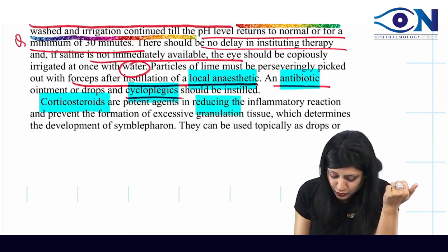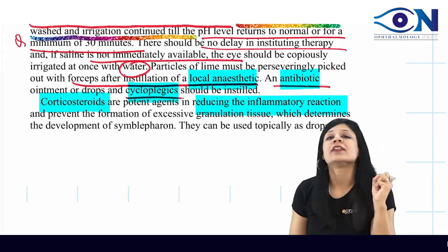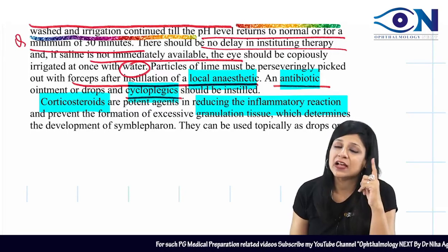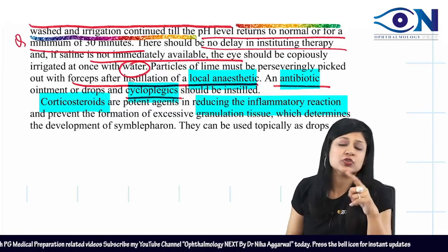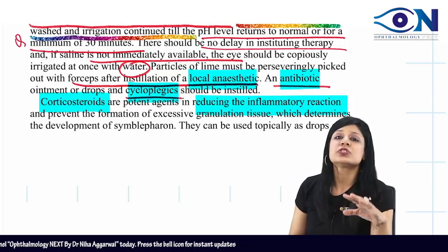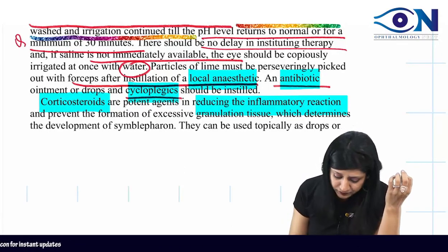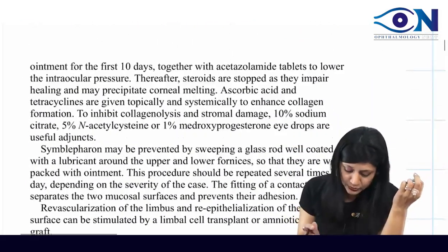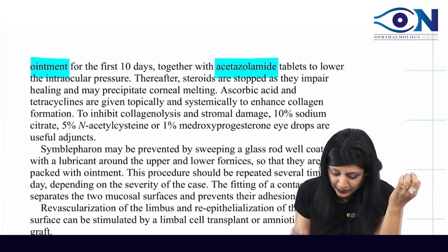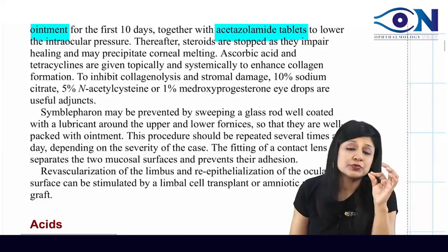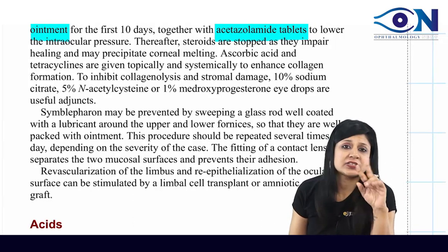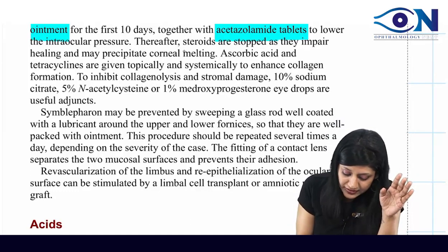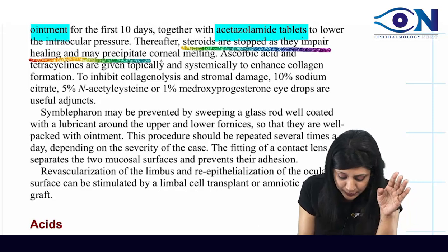Corticosteroids are given to reduce inflammation and prevent granulation tissue formation. Steroids are a double-edged sword — they may cause corneal melting, so their use should be limited in duration. They can be given topically as drops or ointments. Anti-glaucoma drugs such as acetazolamide tablets should be given alongside steroids to decrease intraocular pressure. Steroids can then be tapered to avoid precipitating corneal melting.